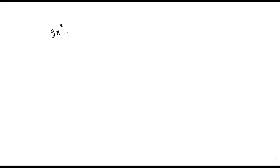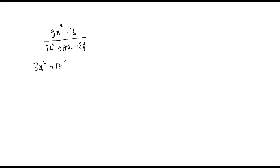The extra problem: nine x squared minus sixteen over three x squared plus seventeen x minus twenty-eight. To factorize the denominator, multiply three by twenty-eight, which is eighty-four. We need to find factors of eighty-four.